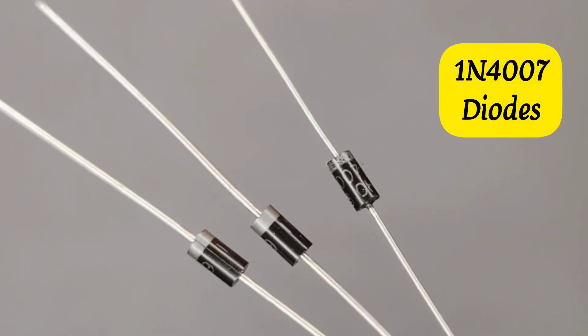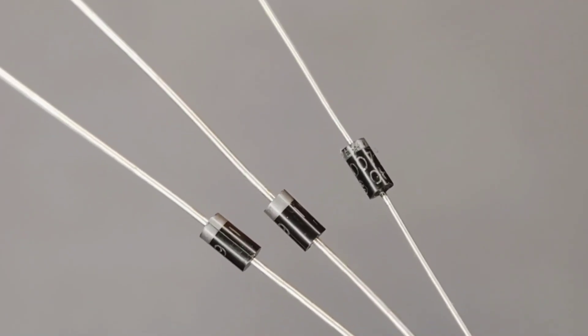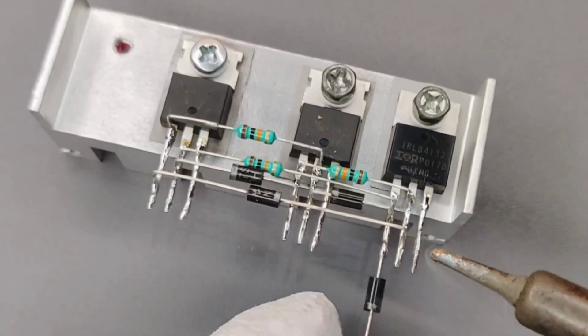Now take another 3 pieces of 1N4007 diodes and solder on every first pin of MOSFETs.